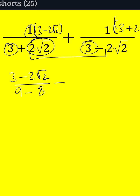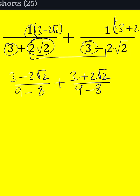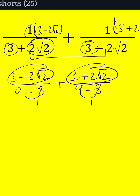And then we need to do the same thing here: 3 plus 2 root 2. But we know that we have a common denominator, so it's going to be 9 minus 8 again. And what is 9 minus 8? It's 1, so we don't even have to worry about it — we just have to add the numerators.